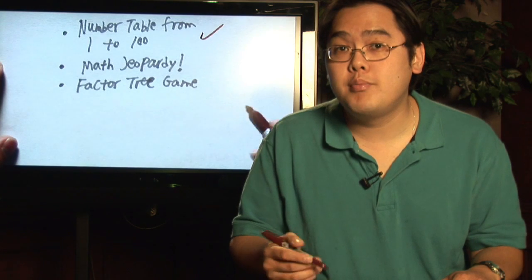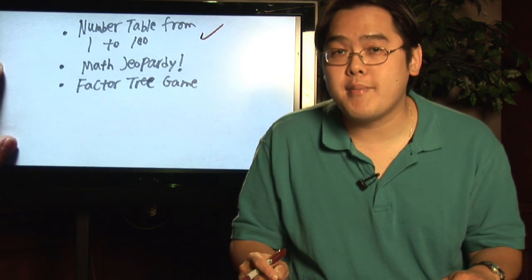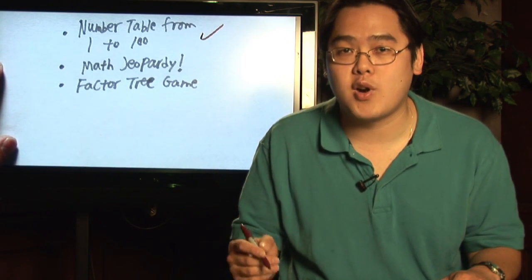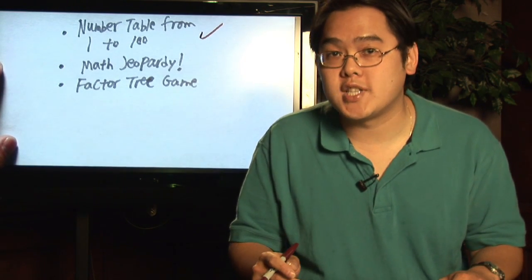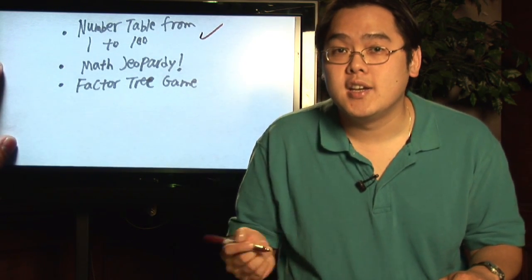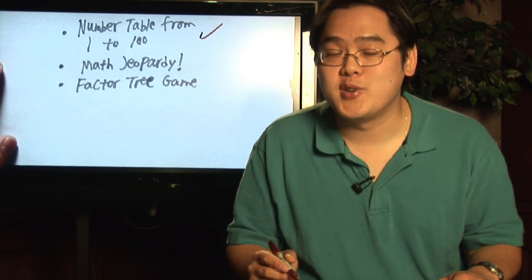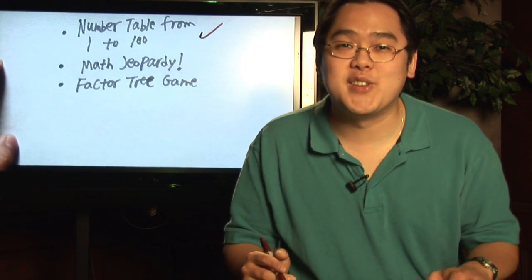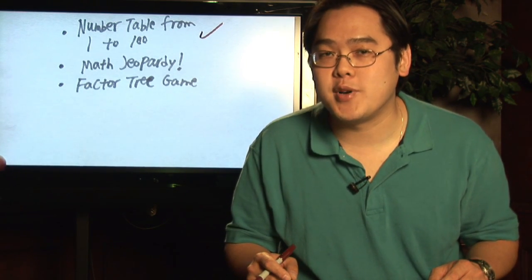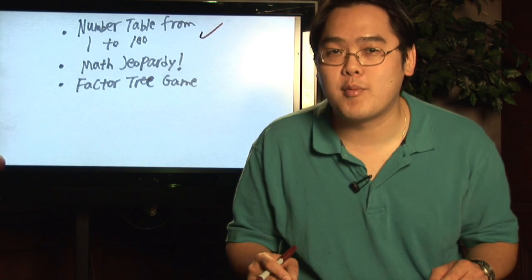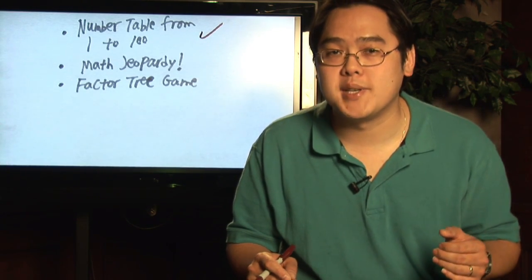If you like, you can put random numbers into a math jeopardy category. If you have a prime and composite number category, just give a number like 36, and the proper answer, the question if you will, would be 'what is composite?' Then you can repeat that with other clues. Using math jeopardy is a good idea to determine prime and composite numbers.